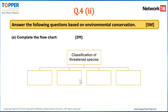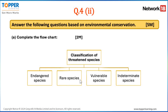Let's see one more question — Question 4, the second sub question: 'Answer the following questions based on environmental conservation.' It was a 5-marker question. We will take up the first 2-marker question: 'Complete the following chart — classify the threatened species.' Four boxes were given. If your concept of threatened species is clear, you know that threatened species are classified into four types: endangered species, rare species, vulnerable species, and indeterminate species. These four categories will fetch you full 2 marks.